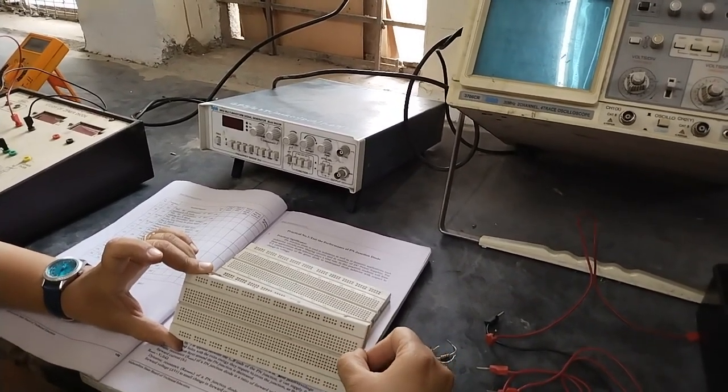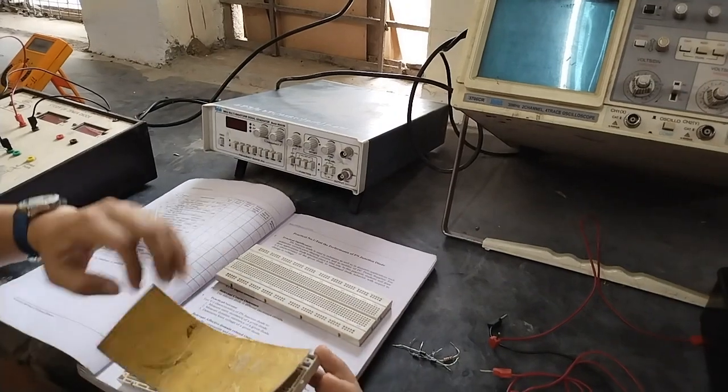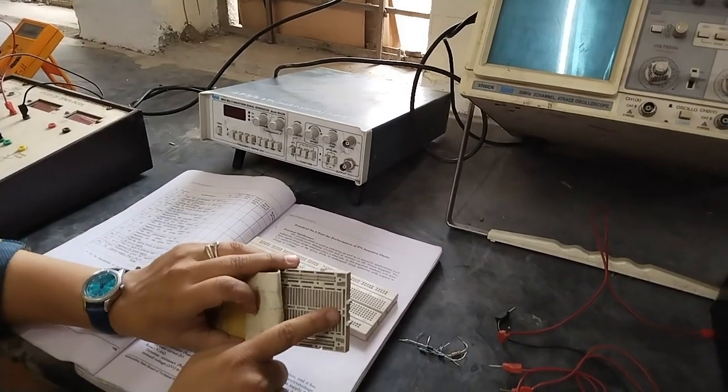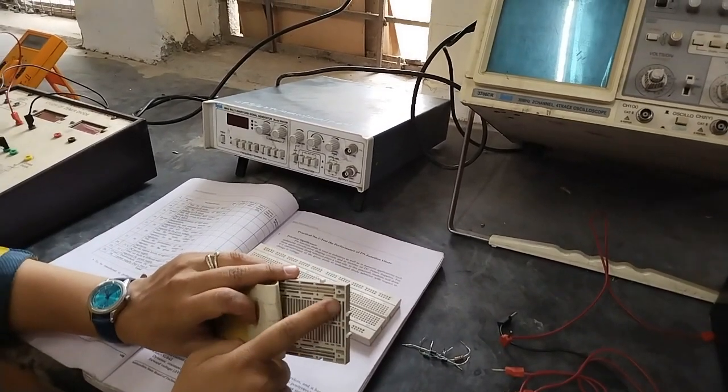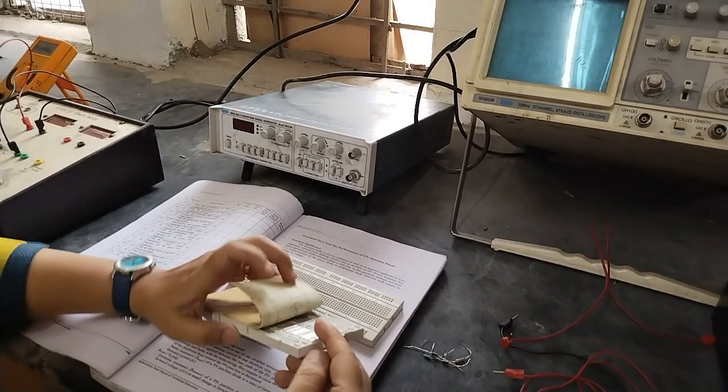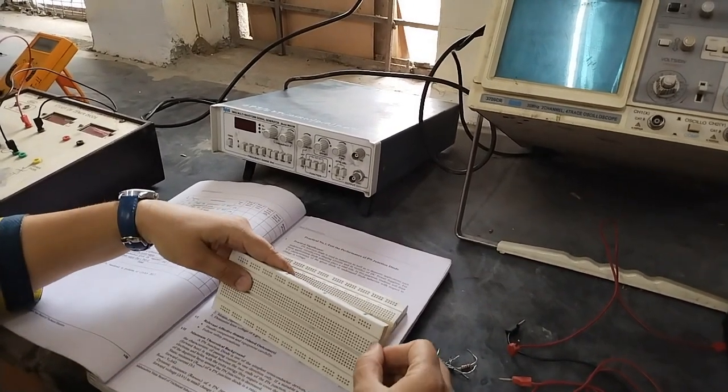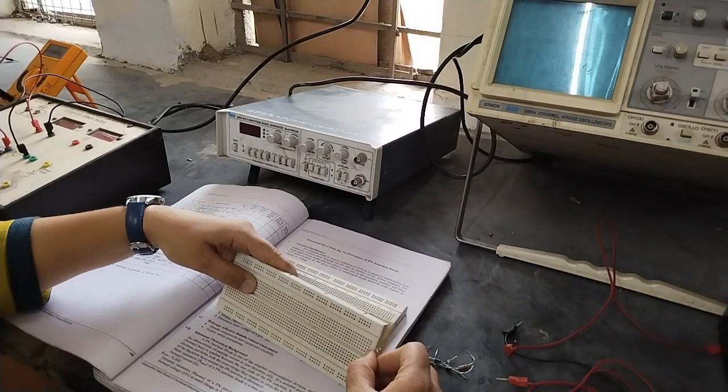These five dots are connected with each other internally like this. You can see this is connected. So conductor is there which is connected from backside. So we can use this as one point.